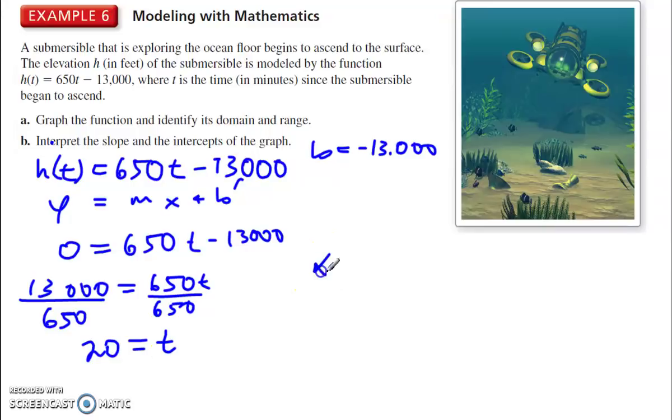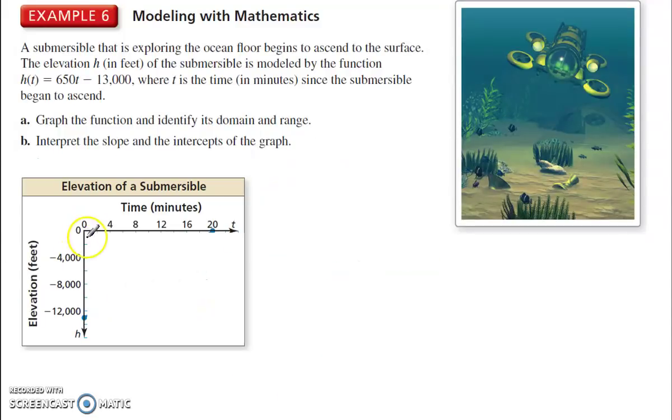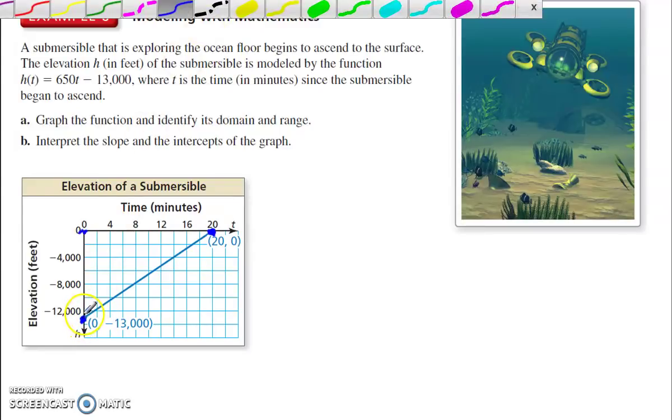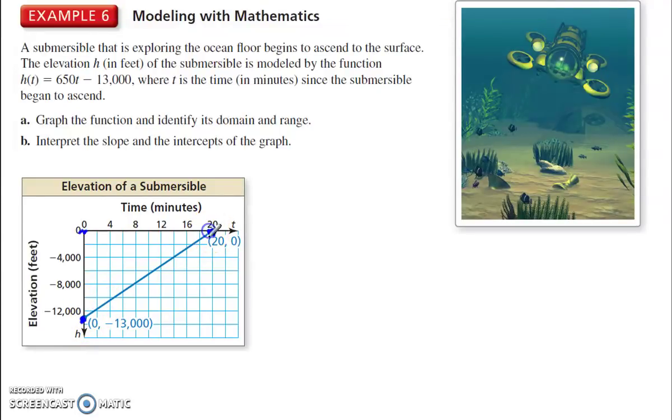Which means the x-intercept is 20. So on a graph, when I'm graphing this, my y-intercept is at negative 13,000. My x-intercept is at 20 minutes. These intercepts, what do they mean? Interpret the slope and the intercepts. The intercept here means when it started out, when time was zero, it was 13,000 below the surface. 20 minutes later, this is the x-intercept, at 20 minutes, the submersible was at the surface. To graph that, I'm going to connect those two intercepts. The reason I used the intercepts this time instead of the slope is because we have 13,000 and then a slope of 650 would be really hard to graph.